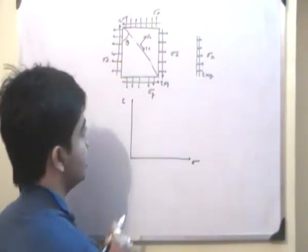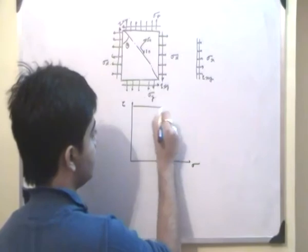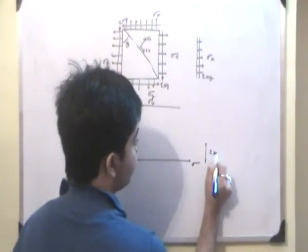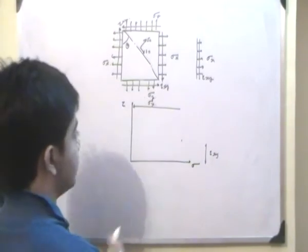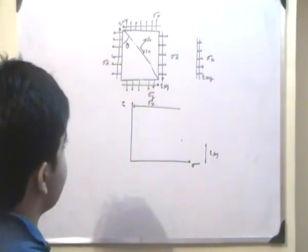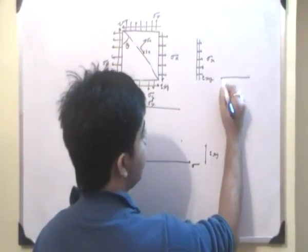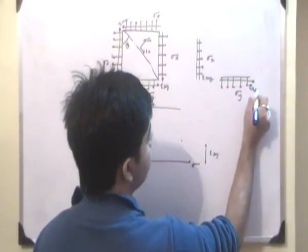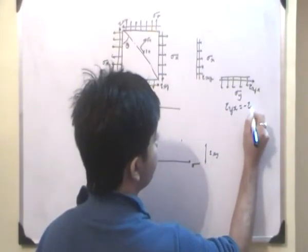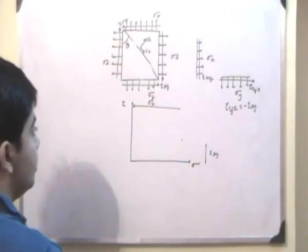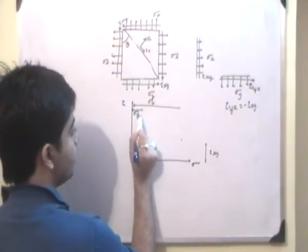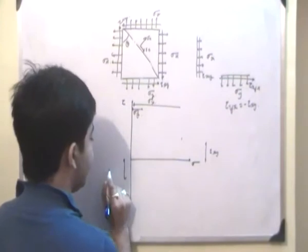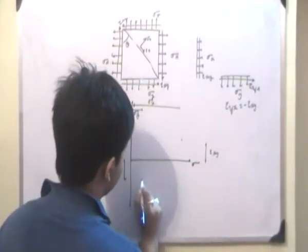If we represent these two stress components for the x-plane, where this value is equal to sigma x and this is equal to tau xy, then we have a point here representing the x-plane. We also need to represent the y-plane, which is characterized by two stress components: sigma y and tau yx. And tau yx is equal to minus tau xy, so the y-plane point is at sigma y and minus tau xy.